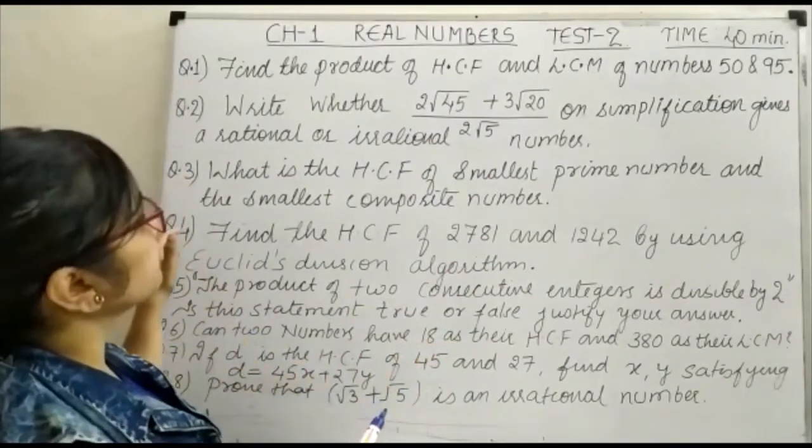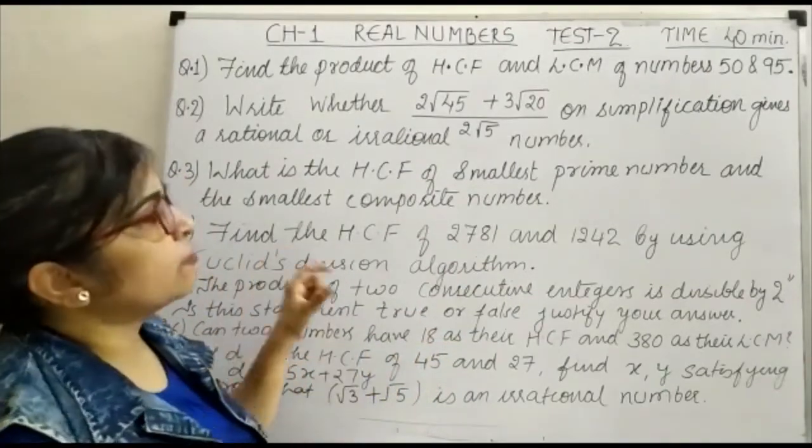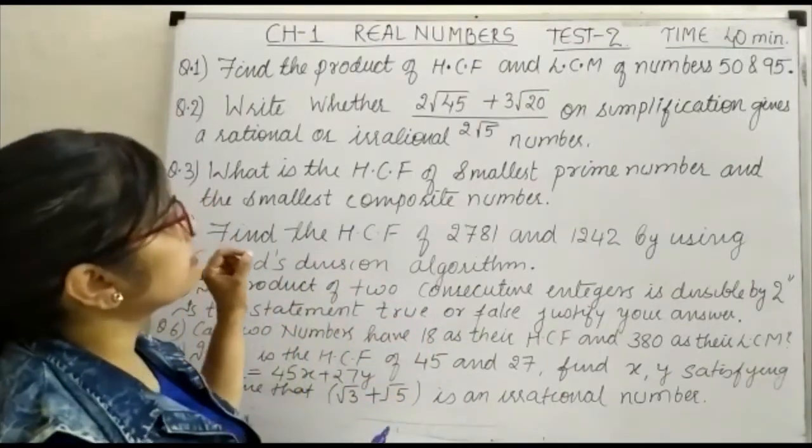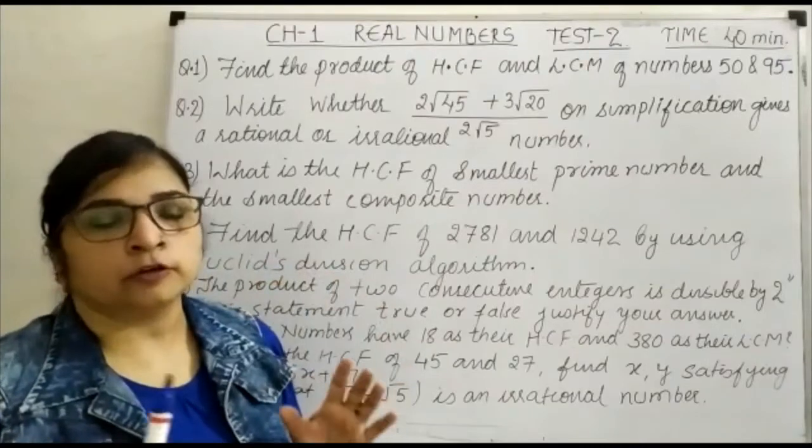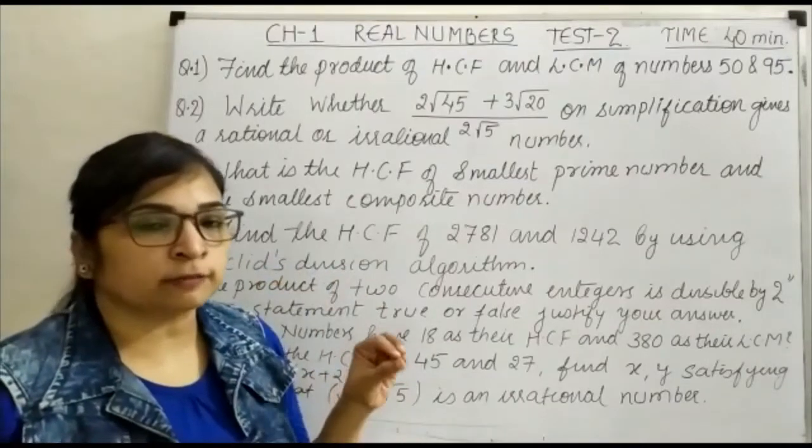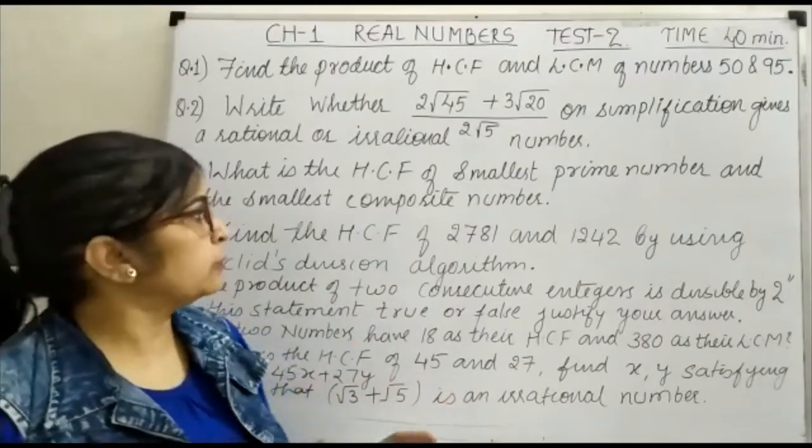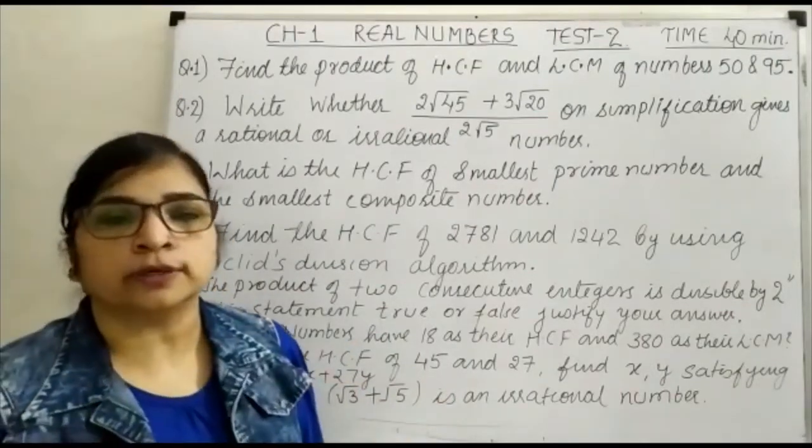Question number 3: what is the HCF of the smallest prime number and the smallest composite number? You have to be very careful - what is the smallest prime number and what is the smallest composite number? Write both numbers first and then find out the LCM.